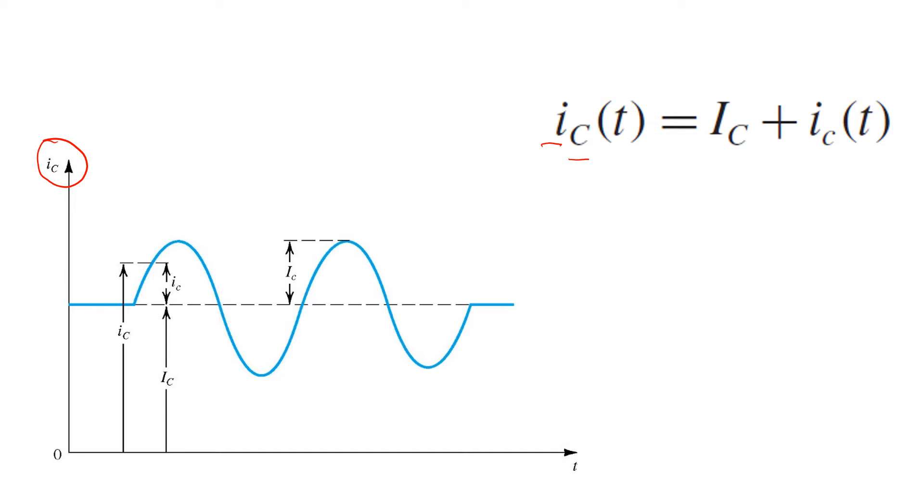But for the DC component, we use all uppercase letters, uppercase i, uppercase subscript c. That's the DC component.